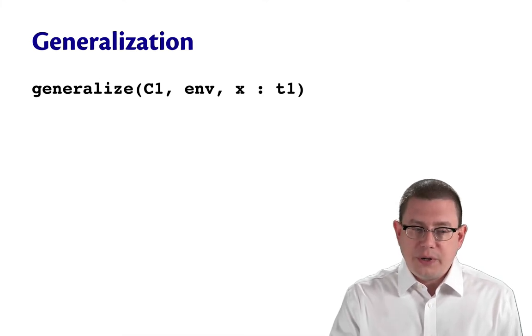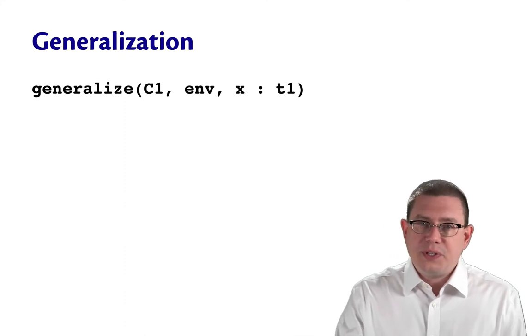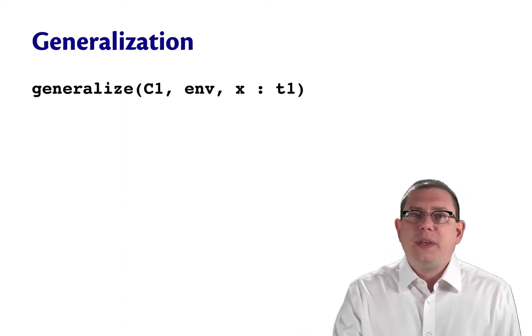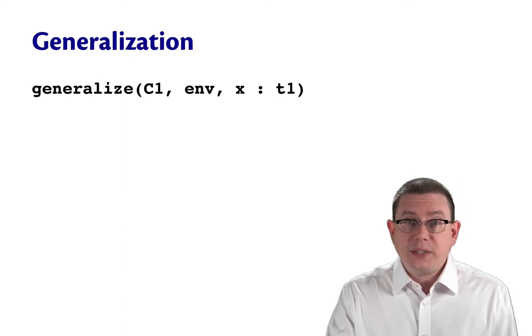So generalization is the harder one of the two. It takes these three or maybe four inputs here: a constraint set, a static environment, a name of a variable, and the type that was initially found for that variable that we're now possibly going to generalize.